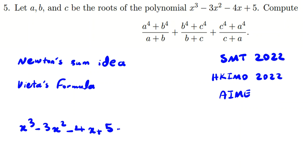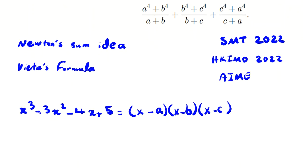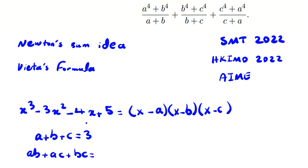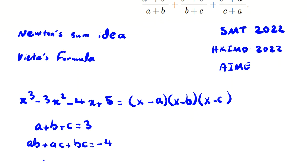The roots are a, b, c, so we consider (x − a)(x − b)(x − c). Matching the coefficient of x² gives negative a − b − c, so a + b + c = 3. The coefficient of x gives ab + ac + bc = −4. And the constant term gives −abc = 5, so abc = −5. These are the Vieta's formula results.